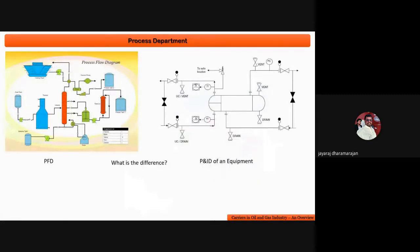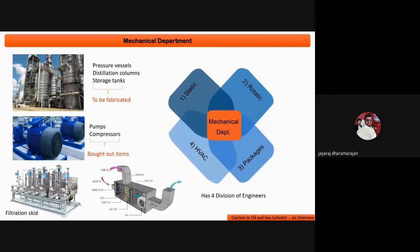The mechanical department has four divisions of engineers: static equipment engineer, rotating equipment engineer, package engineer, and HVAC - Heat Ventilation and Air Conditioning. We can see HVAC in our colleges and malls where heat has to be ventilated and areas need air conditioning. You can see sample pressure vessels, distillation columns, and storage tanks - these are all called static equipment and need to be designed based on process requirements.